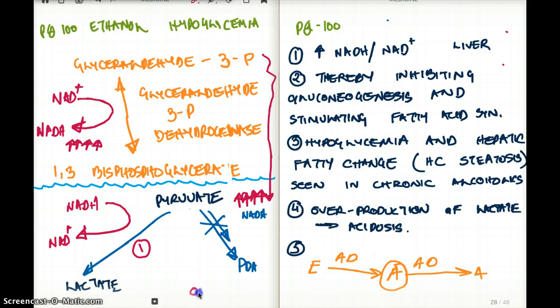We have oxaloacetate to malate. There is a step called oxaloacetate to malate. That step also uses NADH to make NAD+. That step is also favored. So this step and this step, both of them are favored because of increased NADH.